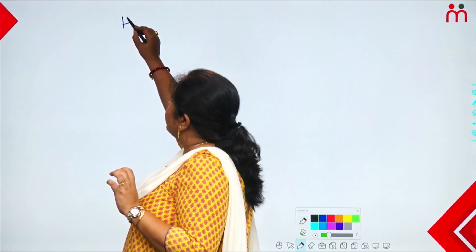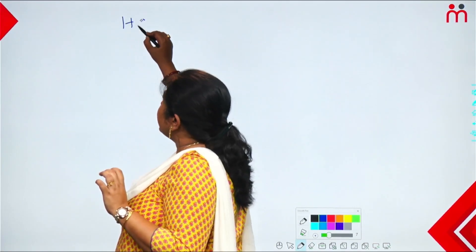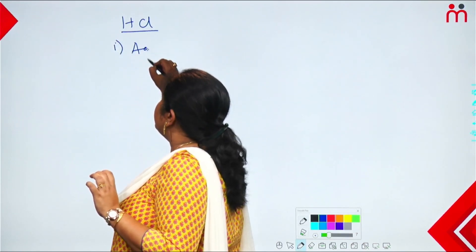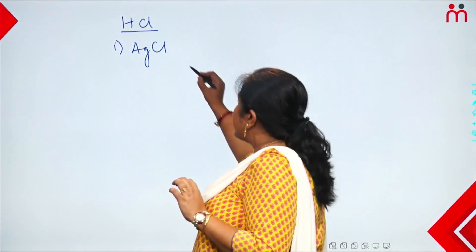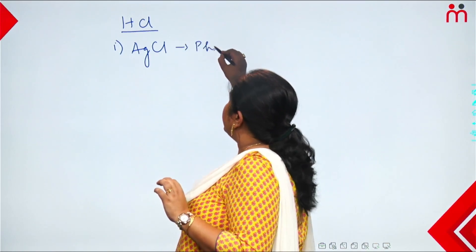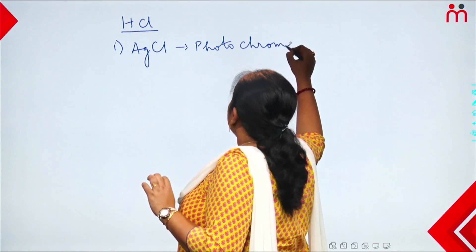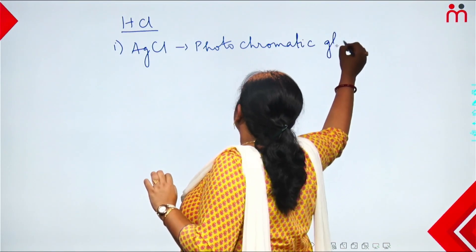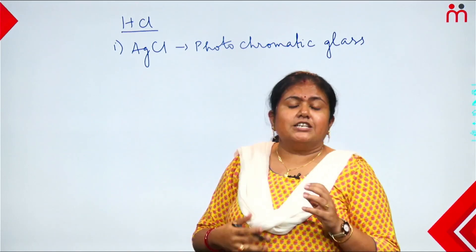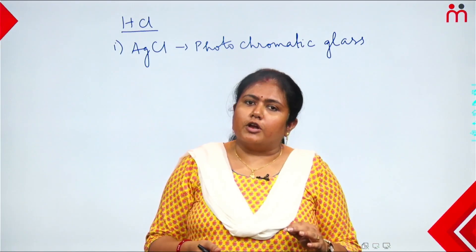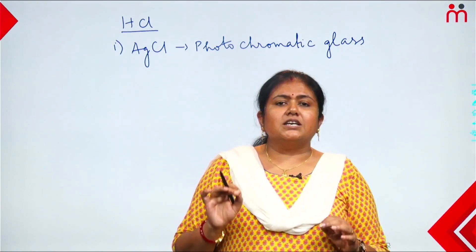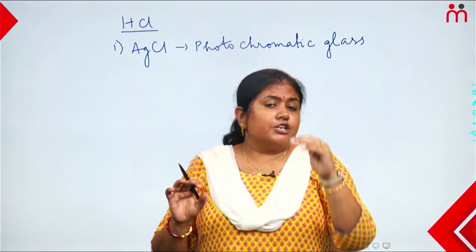First use of hydrochloric acid (HCl): HCl is used to make silver chloride (AgCl). Silver chloride is used in photo-chromatic glass. Photo-chromatic glass lenses change color in sunlight — in sunlight they darken, in normal light they remain clear. Photo-chromatic glass requires silver chloride to manufacture.